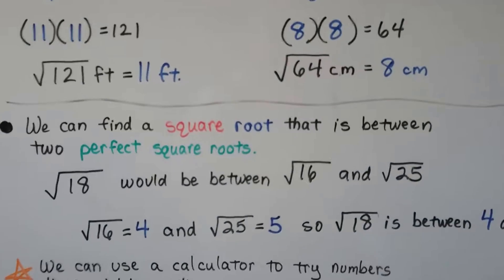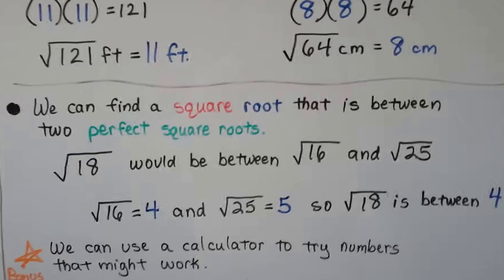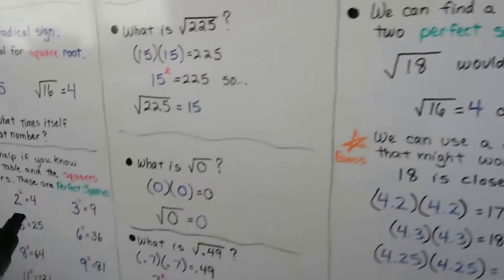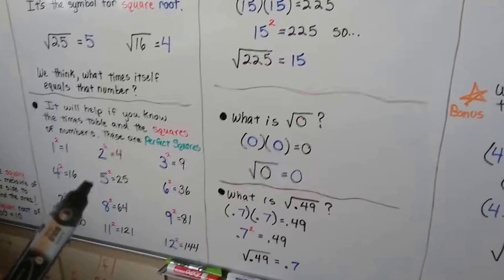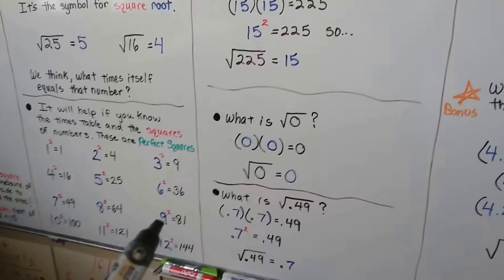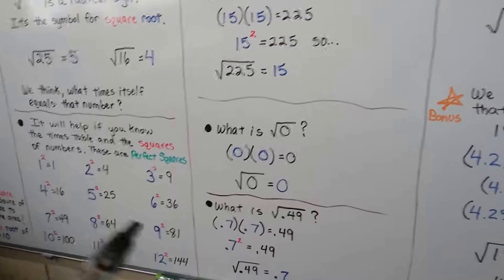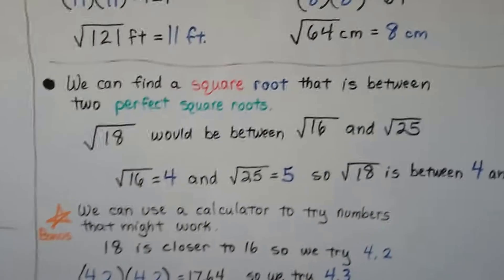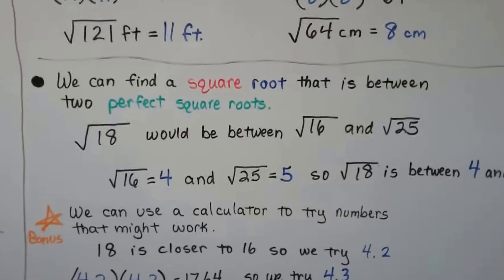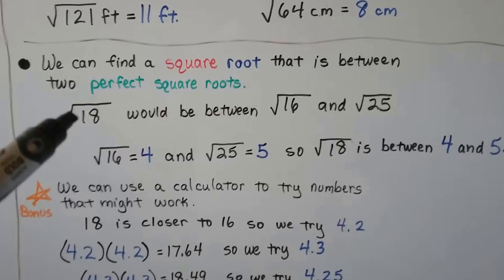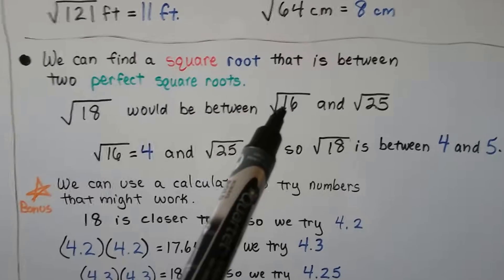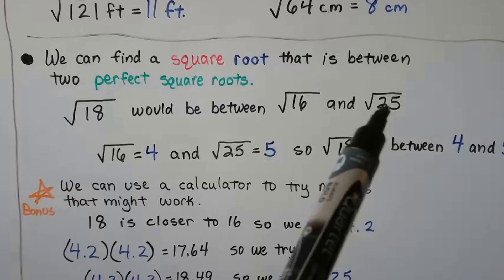We can find the square root that is between two perfect square roots. So, remember, a perfect square root is like these. It's a whole number, like 5 times 5, 8 times 8, 9 times 9. No fractions or decimals. No rationals. We can find a square root that's between two perfect square roots. So, this is not a perfect square root. It falls between the square root of 16 and the square root of 25.